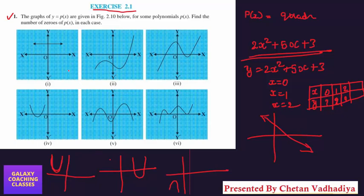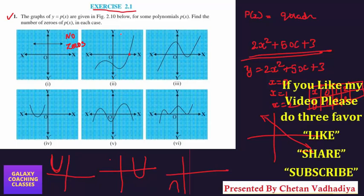So from that we can find out how many zeros we will get. How many times this curve intersects the x-axis, that many zeros you will get. Suppose this is the graph, how many times is this graph intersecting the x-axis? No times, so here you will get no zeros.